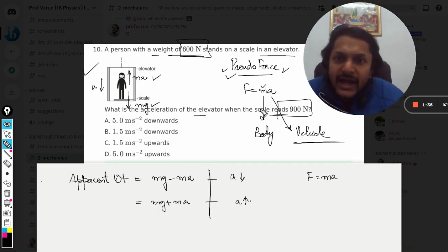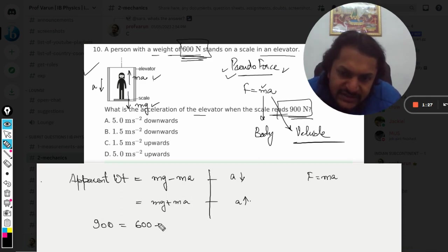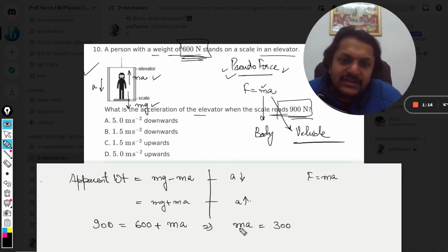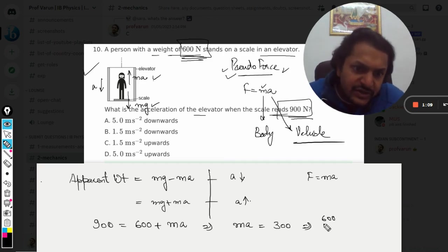So these are the formulas that we are now going to use. And this 600 is now 900, it means something is added into it. So 900 is apparent weight, 600 is actual weight. This implies m into a will be equal to 300, and mass can be taken as weight divided by gravity. So 600 divided by gravity into acceleration will be equal to 300. So it means that acceleration comes out to be 5 meters per second squared.